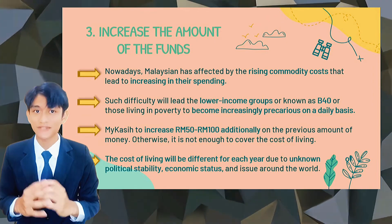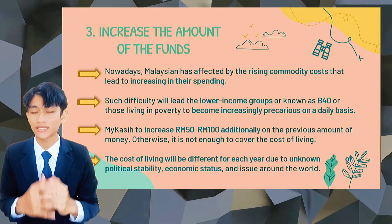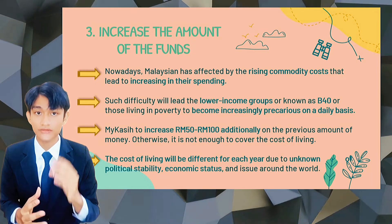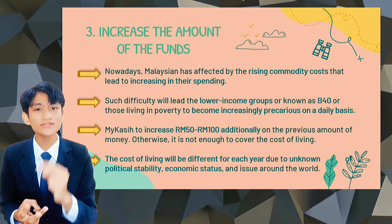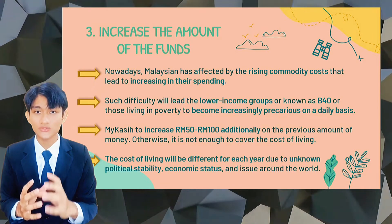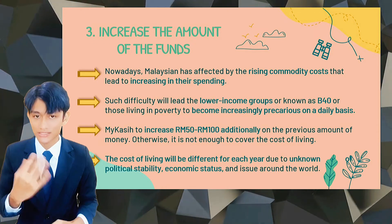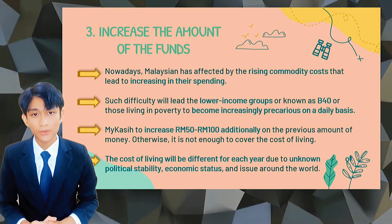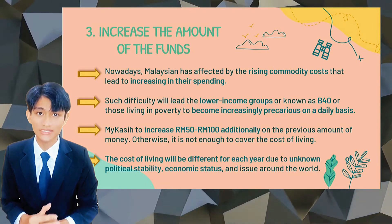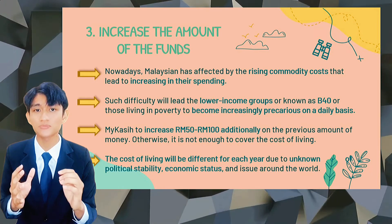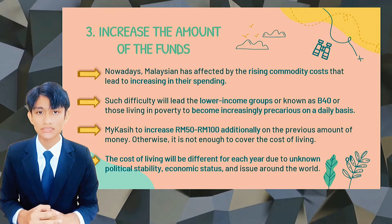Our country has recently been affected by rising commodity costs. For those who are poor, this increase will definitely put a burden on them when buying their daily necessities. Thus, MyKaseh needs to increase their financial assistance in line with the passage of time, current prices of goods, and the current economic situation. If MyKaseh wishes to run the same program like Prihatinkasih next year, the allocation of money needs to be increased from RM100 per month to RM250 per month for three months, since the cost of living in 2022 is quite different from 2021 due to political instability, sluggish economy, and other issues influencing the value of money.